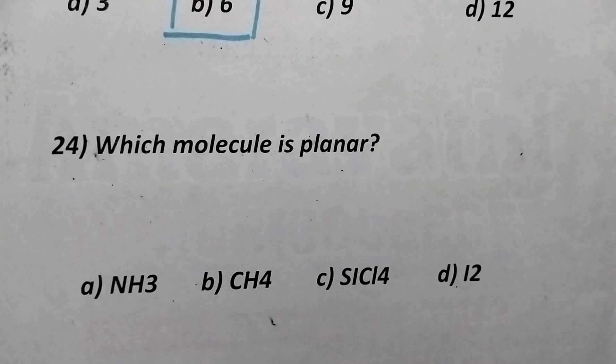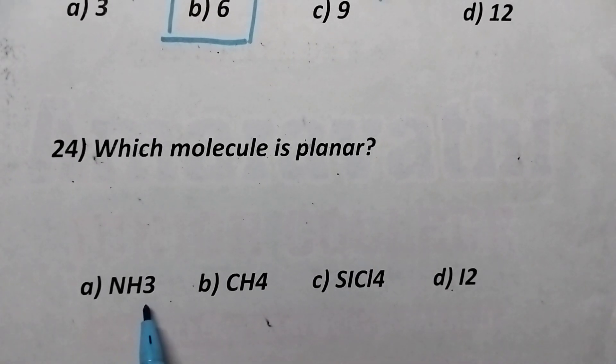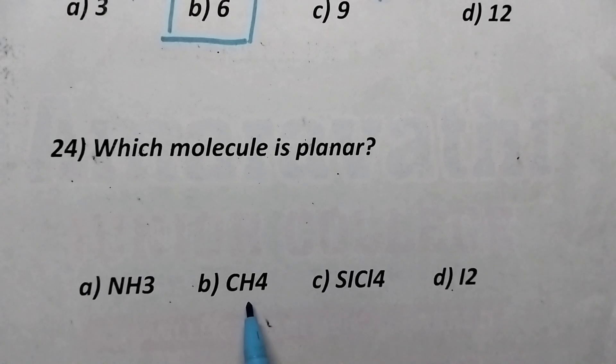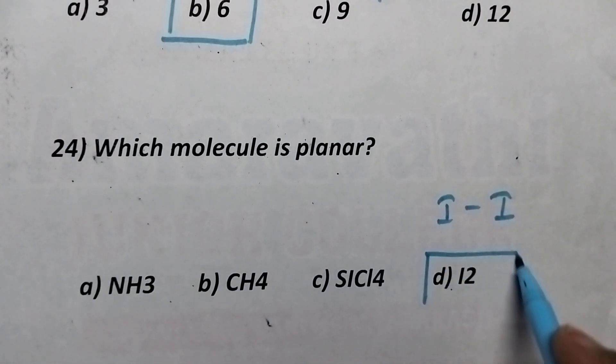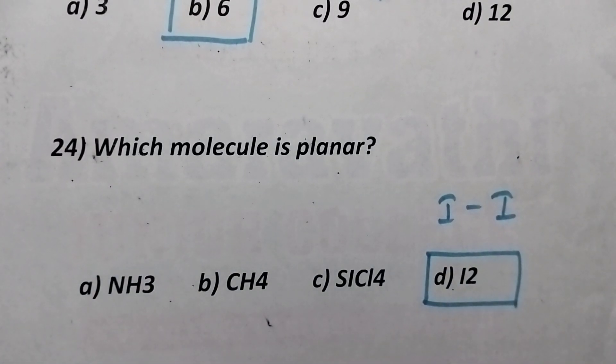Which molecule is planar? So, ammonia is having pyramid structure, CH4 is having tetrahedral structure, SiCl4 is also having tetrahedral structure, whereas iodine is having the planar structure. So, option D is the right answer.